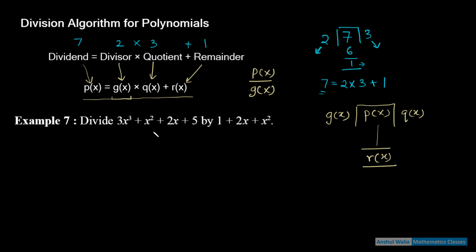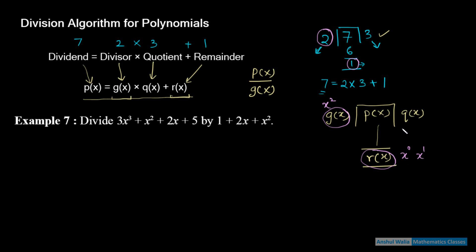एक छोटी सी important बात — जैसे division में remainder हमेशा divisor से छोटा रहता है, polynomials में भी यही होता है। यहाँ degree के terms में: degree of r(x) will always be lesser than degree of g(x)। यह remainder के case में याद रखेंगे।